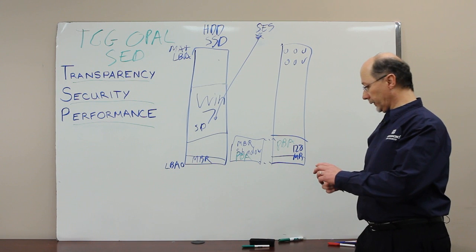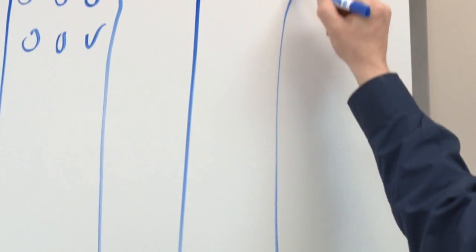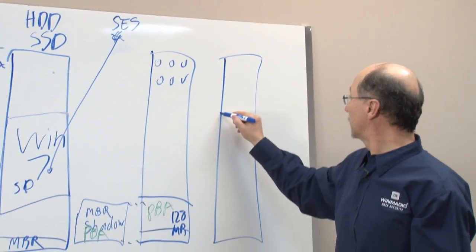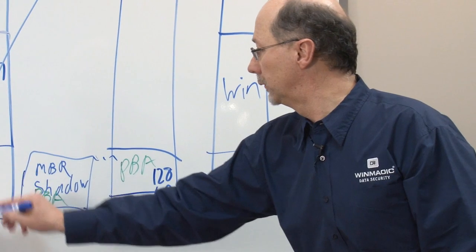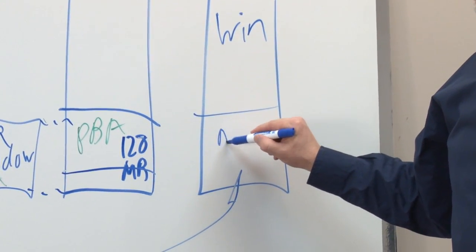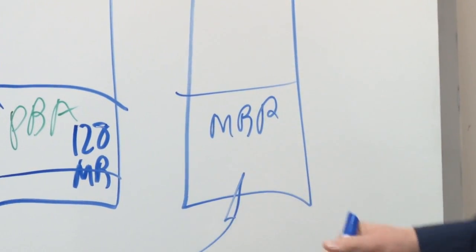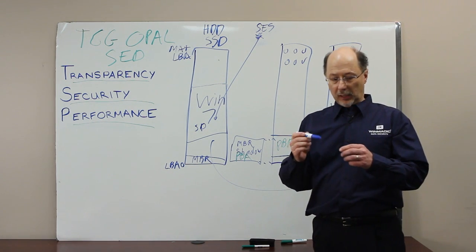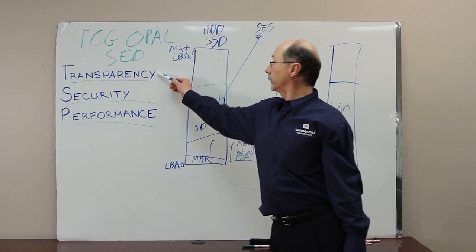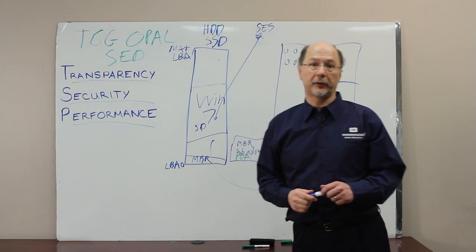And then the drive appears as it did originally to the operating system, to Win 7. And the original MBR reappears. The computer can boot up, and you can enjoy all the normal advantages of SEDS now: transparency, security, and performance. Thank you.